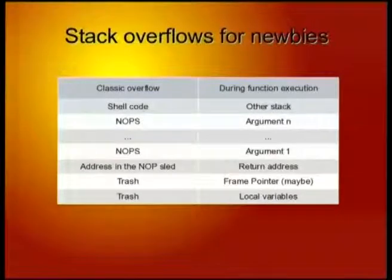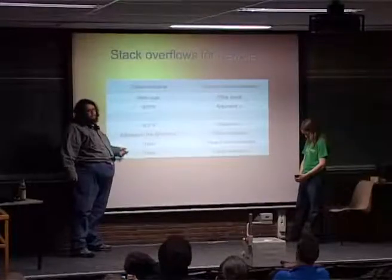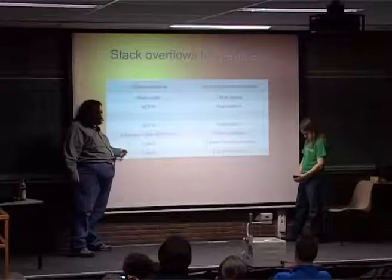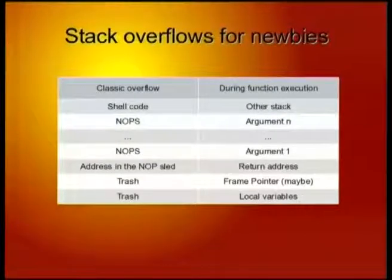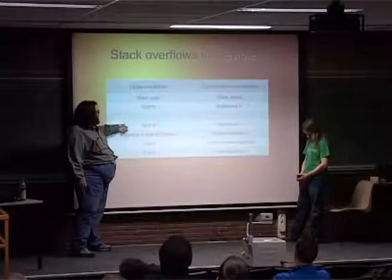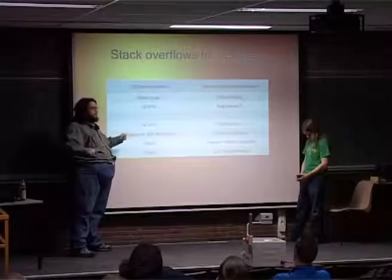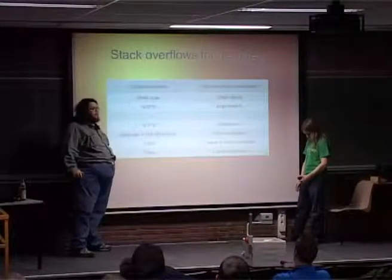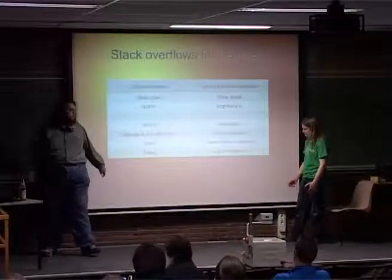What we do is put some random trash in the local variables before our buffer, put random trash on the frame pointer, put an address pointing somewhere around here, put a lot of NOPs — instructions that do nothing — and finally put our evil code that will rm -rf the system or do whatever we want.